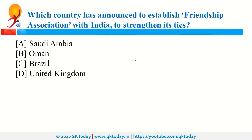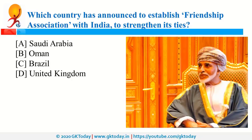Which country has announced to establish a friendship association with India to strengthen its ties? It is Oman. It is a West Asian country and this is a first-of-its-kind initiative in West Asia, led by the foreign ministry, to strengthen the relationship between India and Oman. Both countries will set up this friendship association. Oman's capital is Muscat and its currency is the Omani Rial.